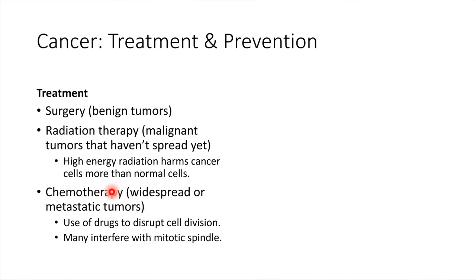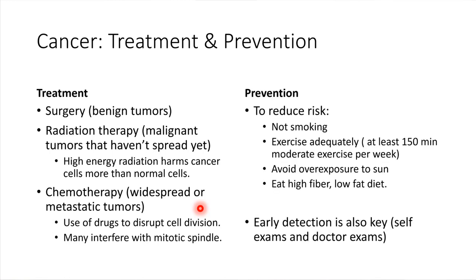Being on chemotherapy essentially halts cell division, and that tends to be more disruptive for cancer cells than for normal cells — because cancer cells are dividing more quickly than normal healthy cells. Those are the major treatments for cancer. But even better than treatment is just to prevent cancers from developing in the first place, so let's touch on prevention — things we can all do to reduce the risk of cancers developing.